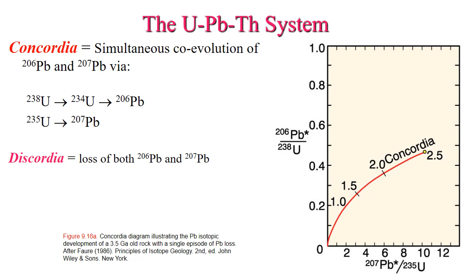We look at parent-to-daughter or daughter-to-parent ratios for two different uranium isotopes. If the ages match, we call this concordant — meaning simultaneous co-evolution of lead-206 and lead-207. If they don't match, they are considered discordant. This is illustrated by the Concordia diagram, which shows the evolution of the lead-207 and lead-206 systems in comparison to each other over 2.5 billion years. The most common minerals used for this system are zircon and monazite.